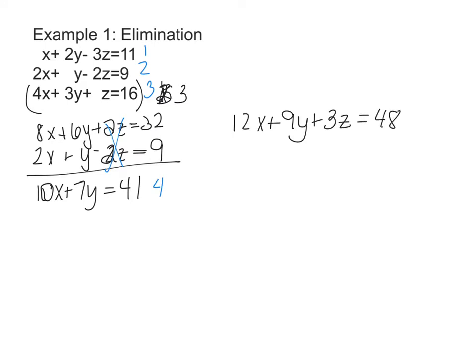I'm going to add that to equation 1, x + 2y - 3z = 11. I get 13x + 11y, my z's cancel, equals 59. I'm going to call this equation 5.